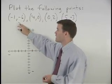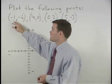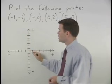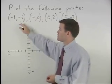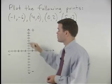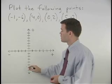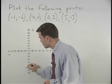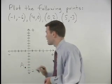So for our first point, negative 1, negative 6: since the x coordinate is negative 1, that tells us we move one unit to the left from the origin. And since the y coordinate is negative 6, that tells us we move 6 units down from the origin. So we go 1 to the left and 6 down, and we can label that point A.